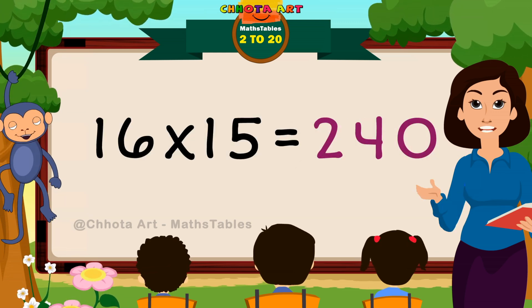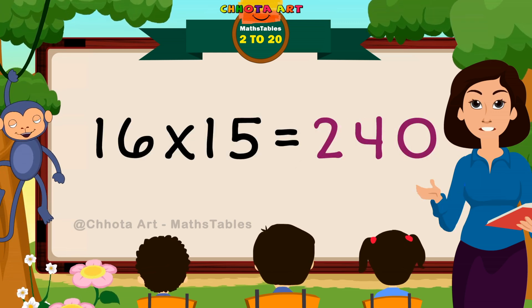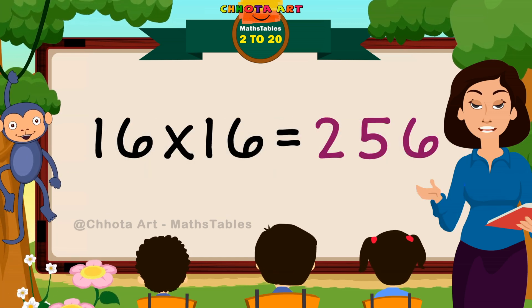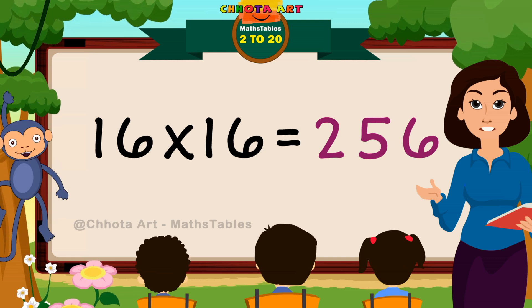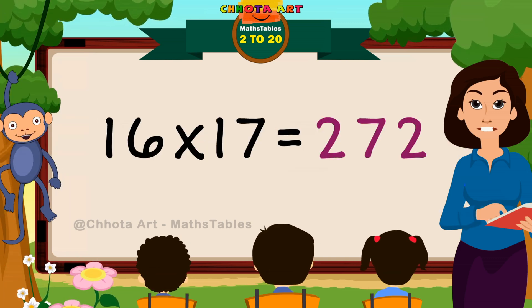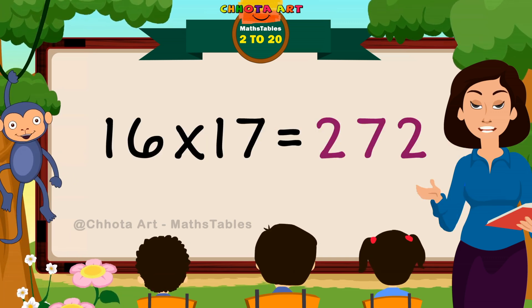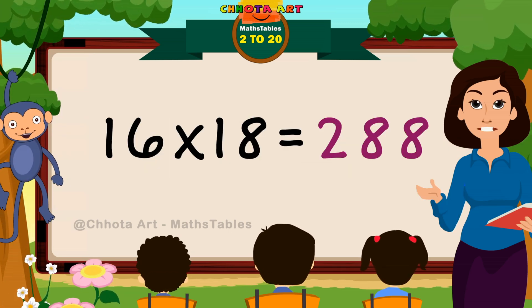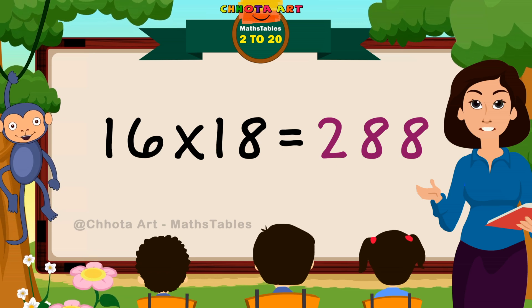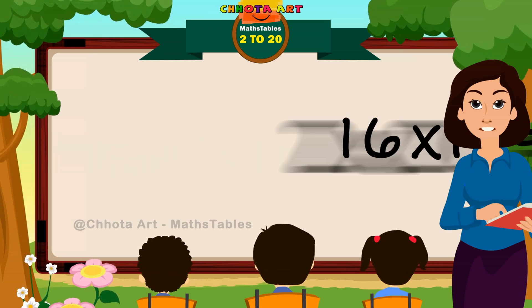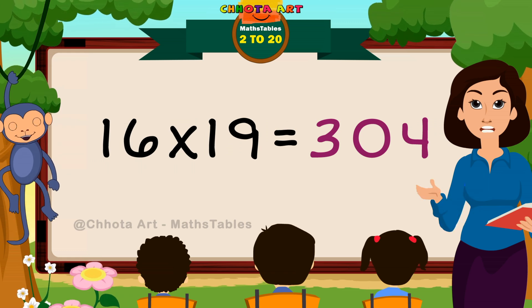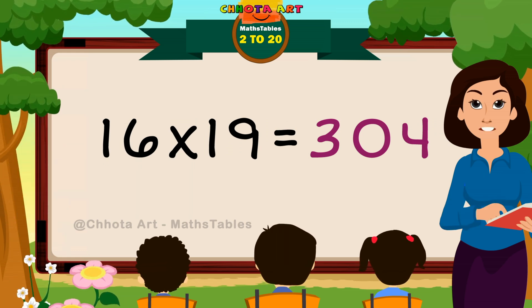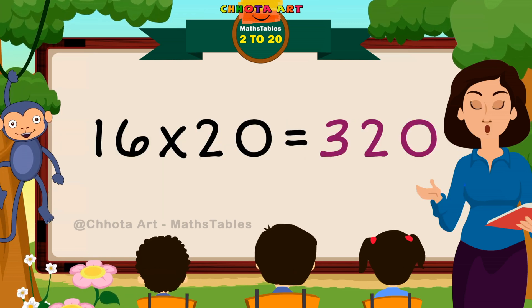16 fifteens are 240. 16 sixteens are 256. 16 seventeens are 272. 16 eighteens are 288. 16 nineteens are 304. 16 twenties are 320.